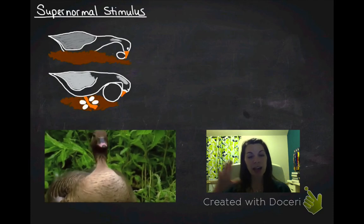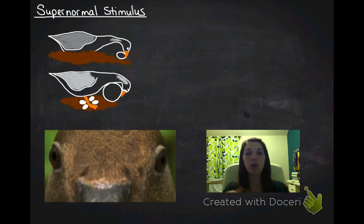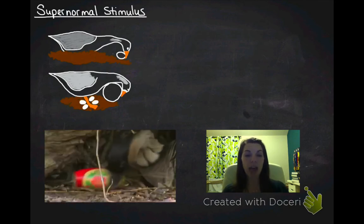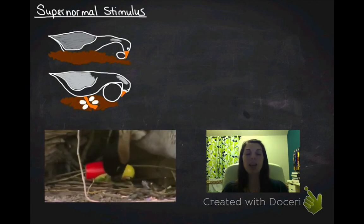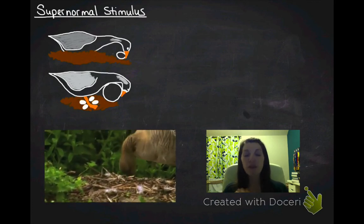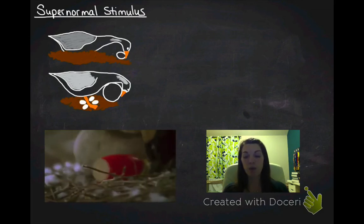I can put the ostrich egg in front of it and its own egg in front of it and it will actually roll the large egg back towards it. You can put a fake giant egg in front of it and it will still preferentially roll the fake giant egg over its own egg. That's a supernormal stimulus.